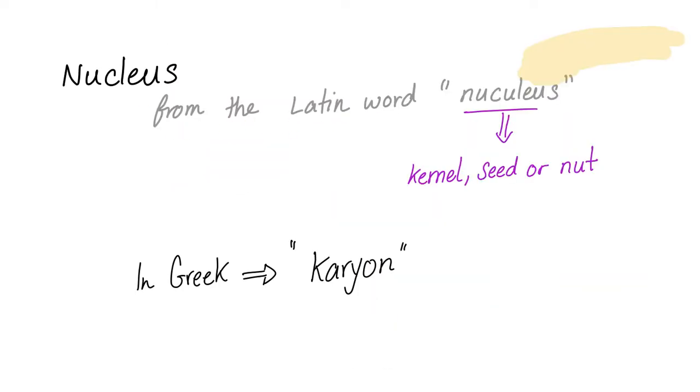Nucleus comes from the Latin word meaning kernel or seed or nut. In Greek, it's called karyon, so we have the eukaryotes, they are the cells with the true nucleus karyon.